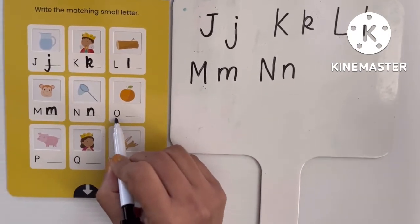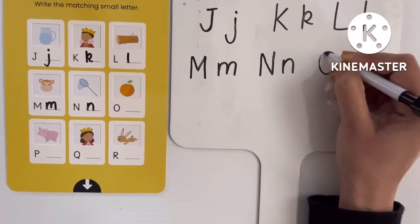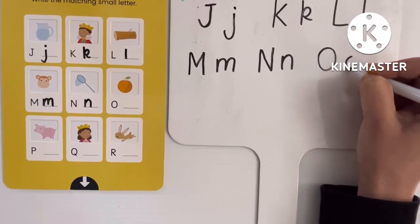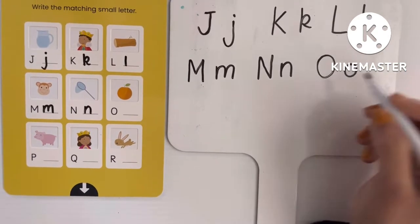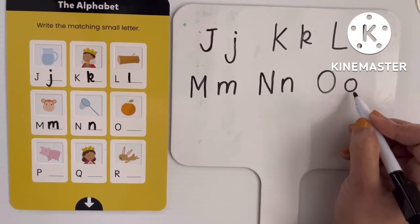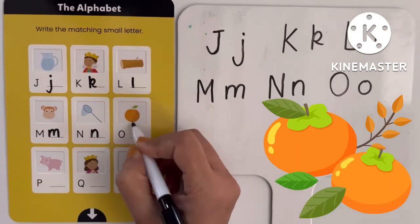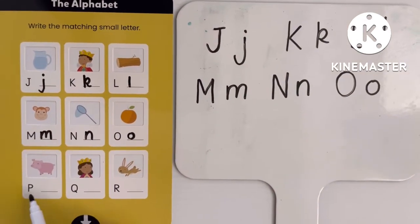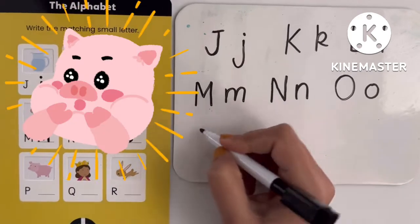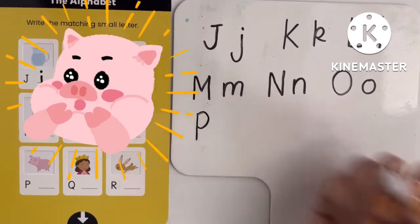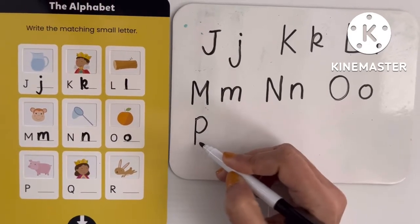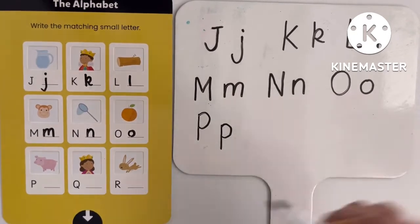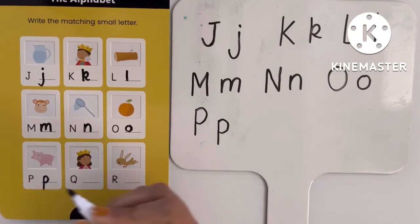Next letter is O. This one is capital O, and in lowercase this O we write like this. So this one is capital letter and this one is small letter — O means orange. Next, P — P means pig. This P is the uppercase letter, and in lowercase we write P like this. So this one is lowercase P — P means pig.